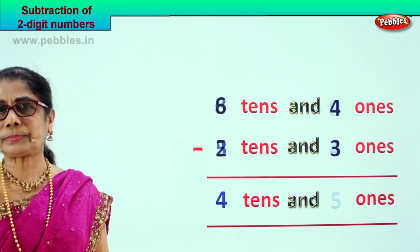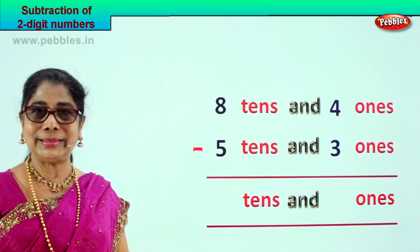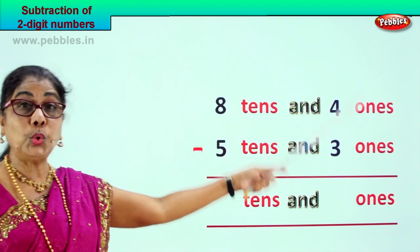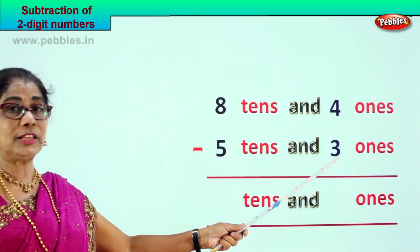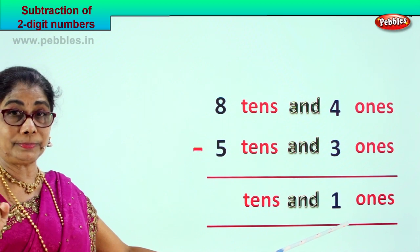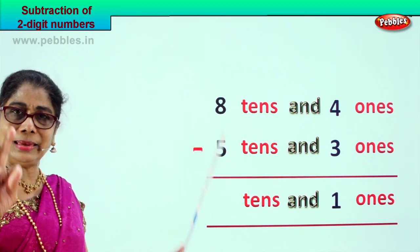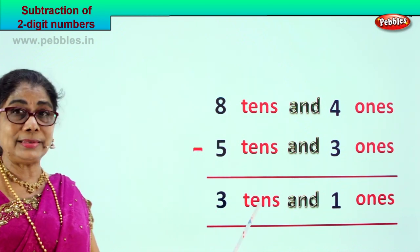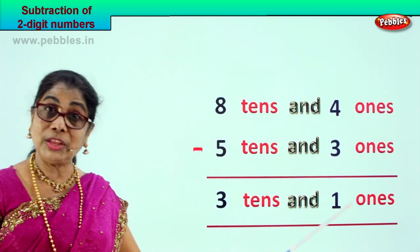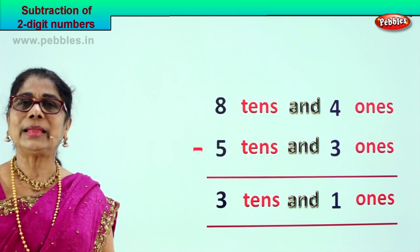Shall we take a new sum now? 8 tens and 4 ones minus 5 tens and 3 ones — 84 minus 53. Let's find the answer together. We will go to the ones please: 4 ones minus 3 ones — 4 take away 3 is 1. Then tens: 8 minus 5 is 3. Write 3 tens here. Your answer is 3 tens and 1 one. 8 tens and 4 ones minus 5 tens and 3 ones gives you 3 tens and 1 one. Did you enjoy the 2-digit subtraction?